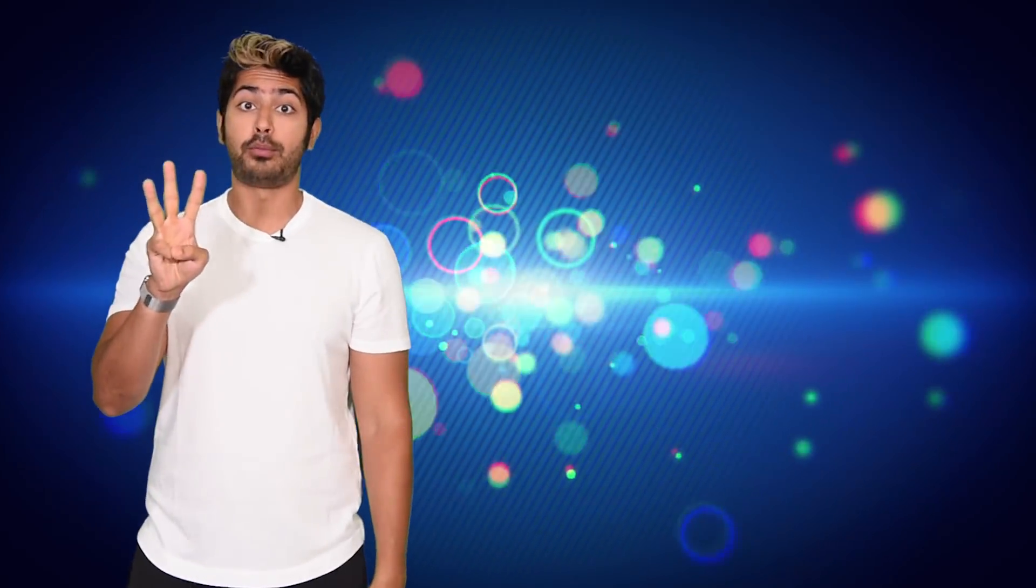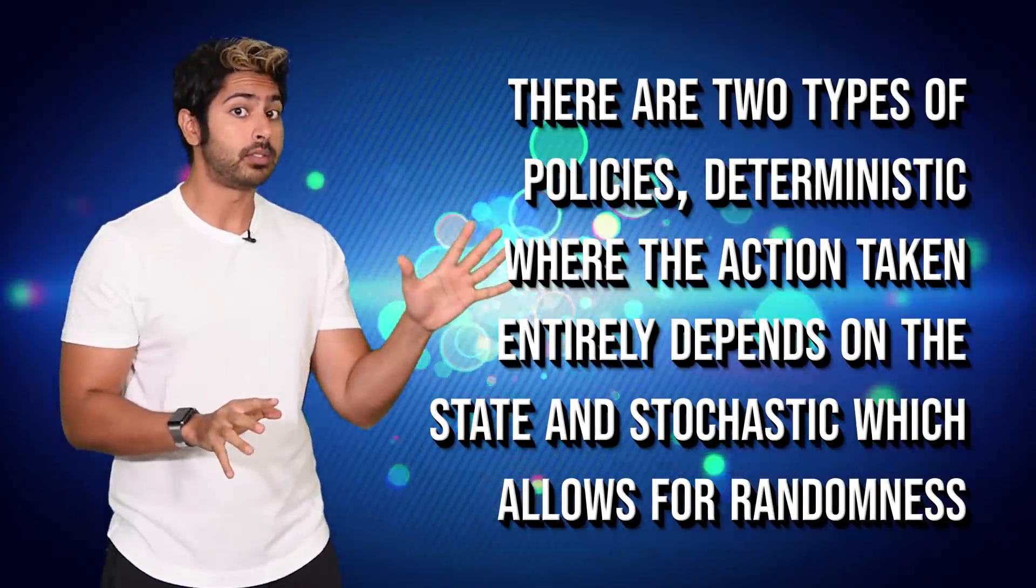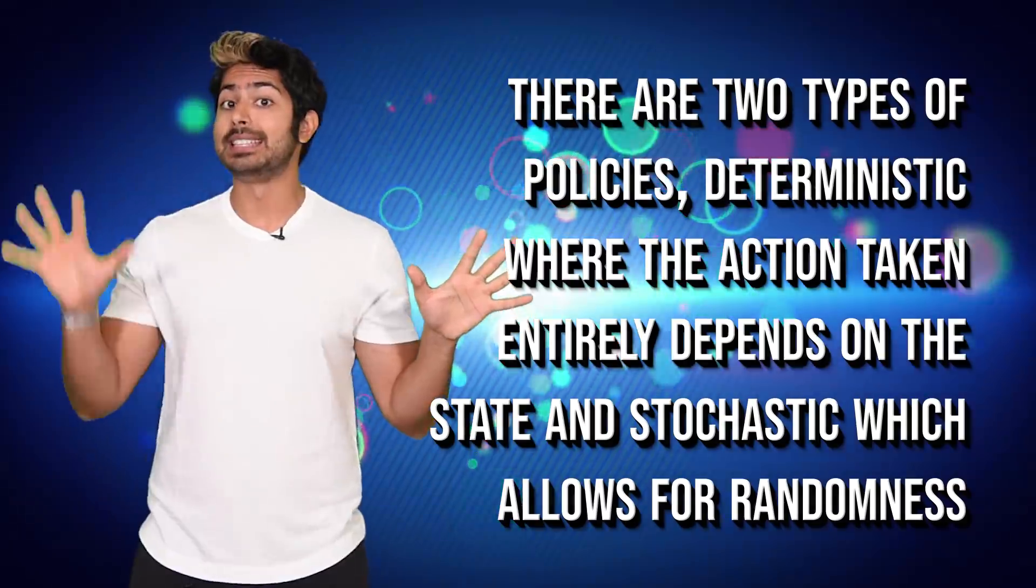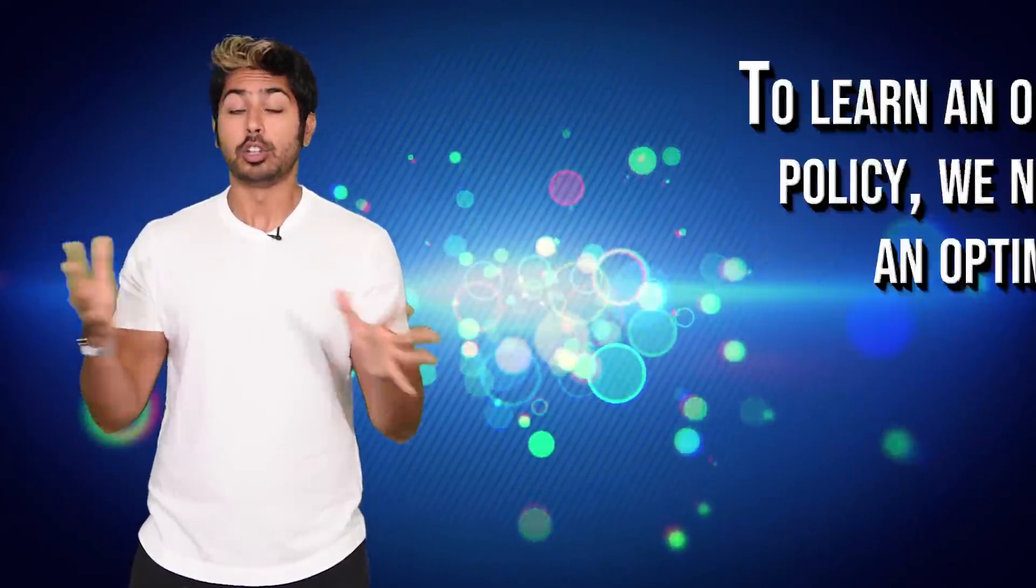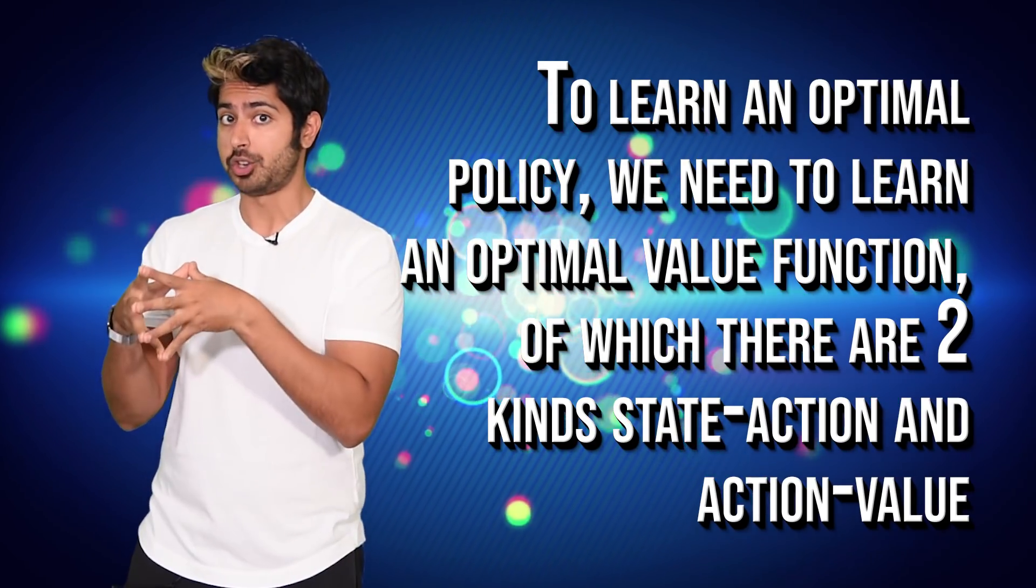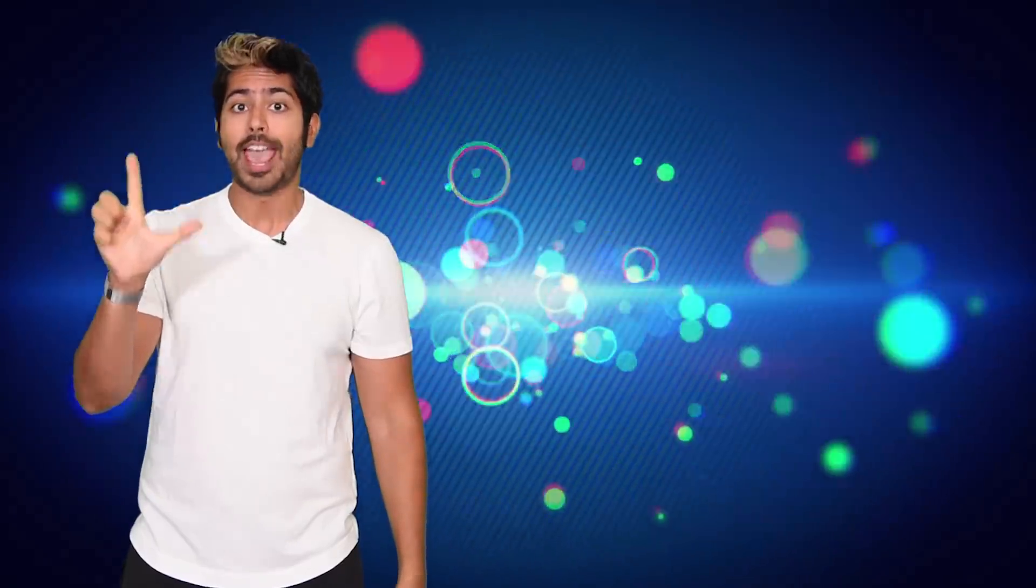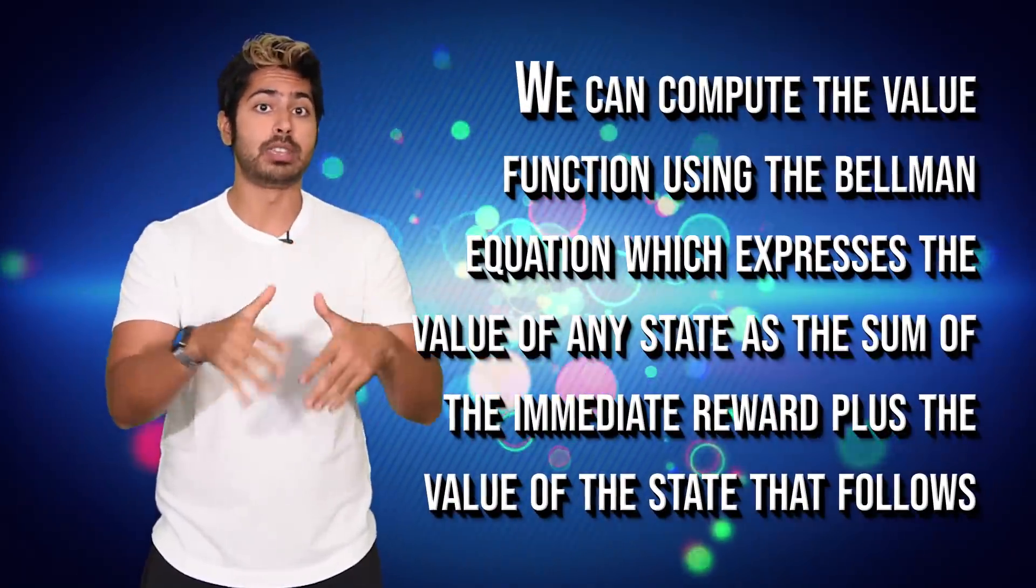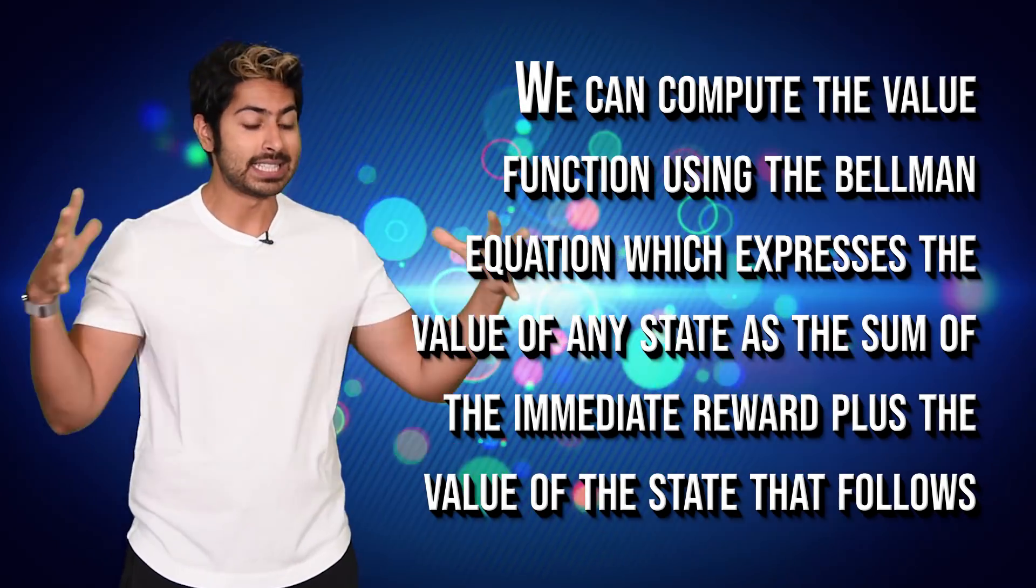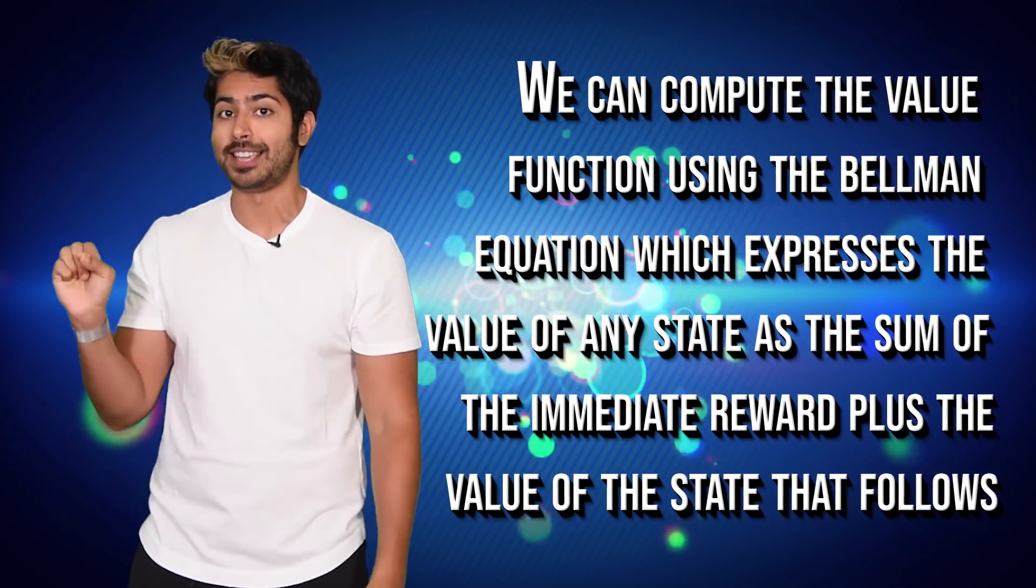Three things to remember from this video, though. There are two types of policies: deterministic, where the action taken entirely depends on the state, and stochastic, which allows for randomness. To learn an optimal policy, we need to learn an optimal value function, of which there are two kinds: state action and action value. And we can compute the value function using the Bellman equation, which expresses the value of any state as the sum of the immediate reward plus the value of the state that follows.